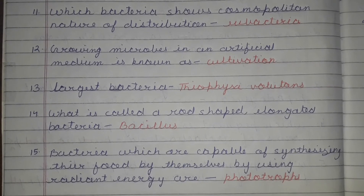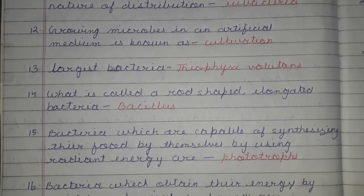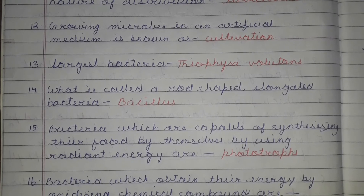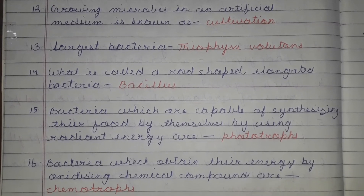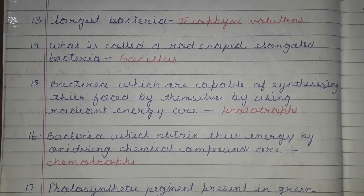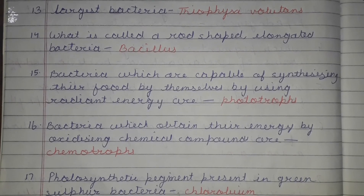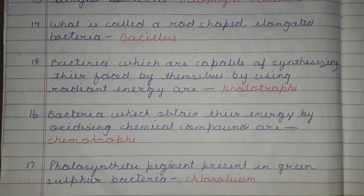Bacteria which are capable of synthesizing their food by themselves using radiant energy are called phototrophs, also known as photo-autotrophs. Bacteria which obtain their energy by oxidizing chemical compounds are chemotrophs, also called chemo-autotrophs.